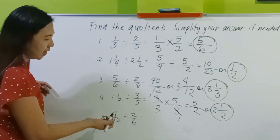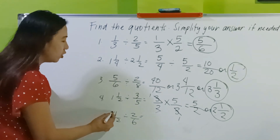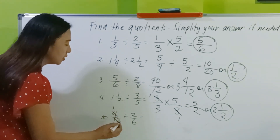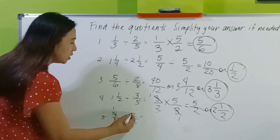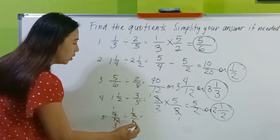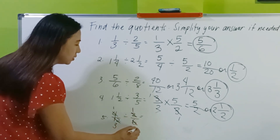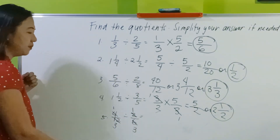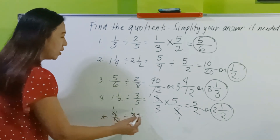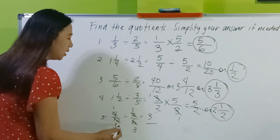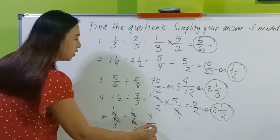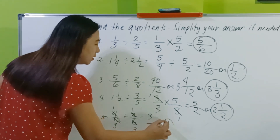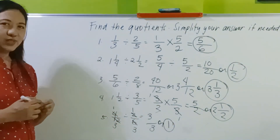And we're down to the last one. Let's try the shorter cut of shortcut and apply simplifying fractions. You may simplify 4/12 into 1 third, and 2/6 is also 1 third. Now let's cross multiply: 3 times 1 is 3, 3 times 1 is 3, which equals 1.